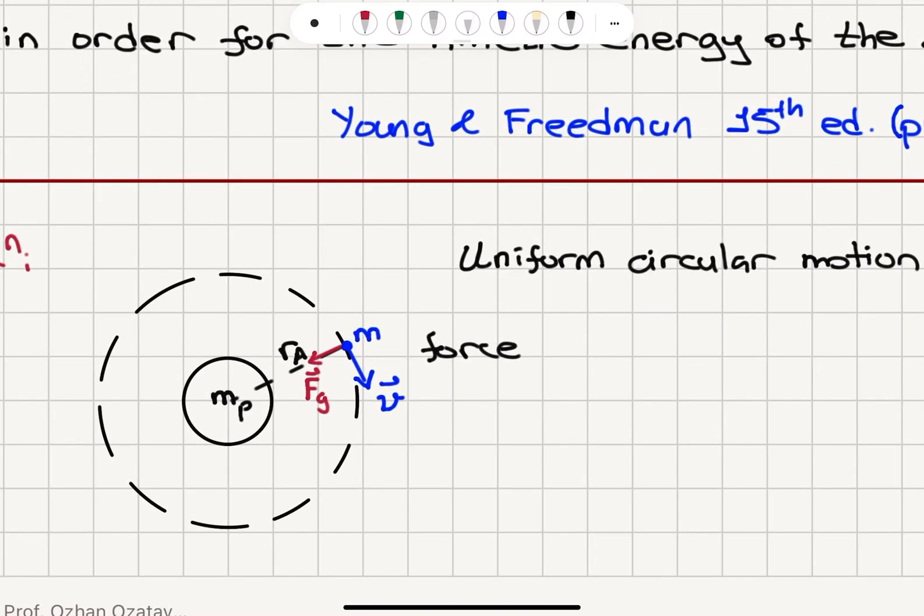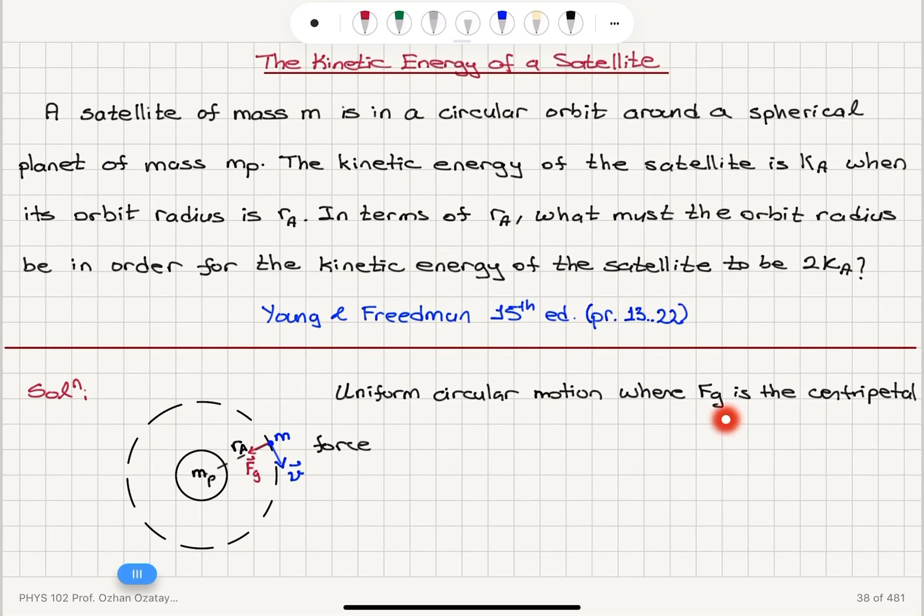So we have uniform circular motion of this satellite around this spherical planet at a radial distance r a from the center. We have the centripetal force, the gravitational force. Therefore, in uniform circular motion...